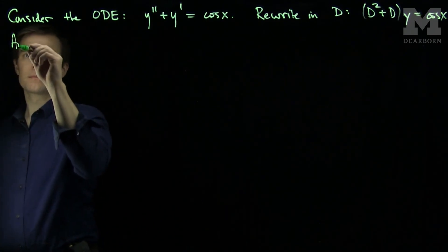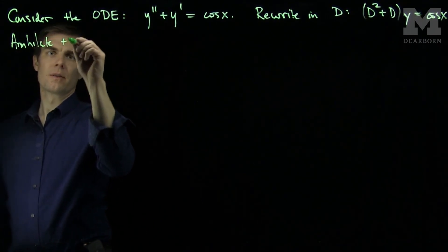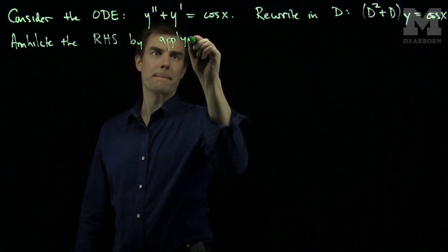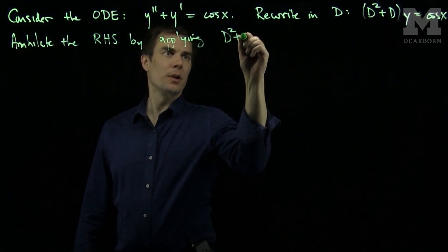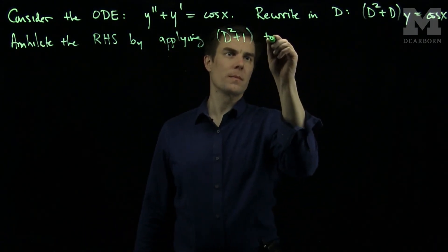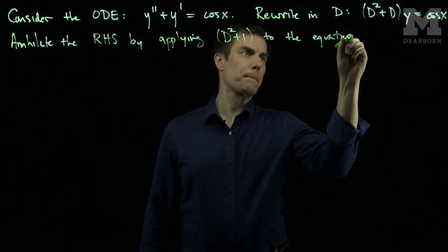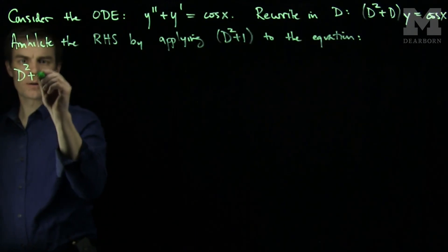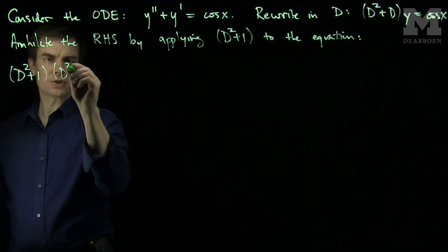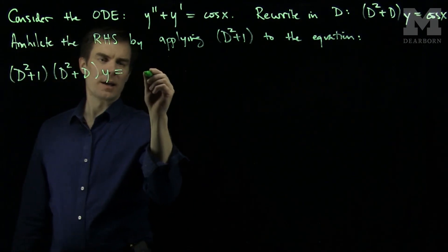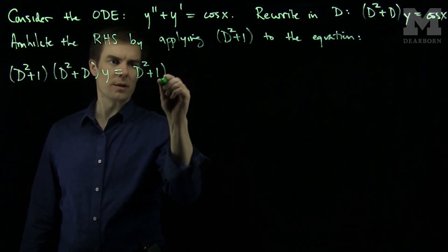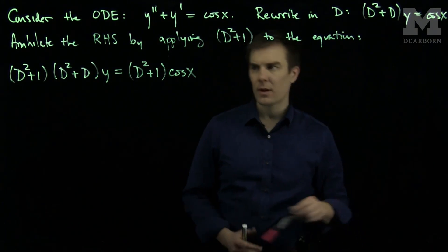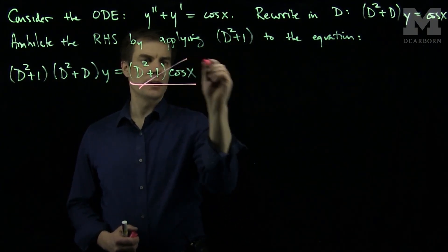Following our general method, we'll annihilate the right hand side by applying (D² + 1) to the equation. Our equation is then replaced with (D² + 1)(D² + D) applied to y equals (D² + 1) applied to cos(x). We know that (D² + 1) applied to cos(x) is 0.